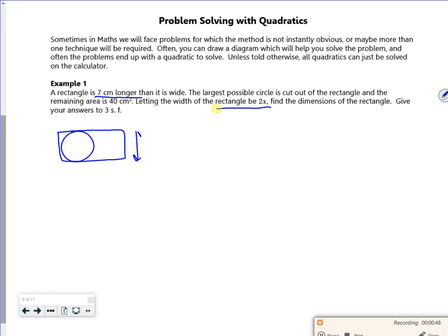So it tells you the width is 2x. It tells you that the length is seven longer. Now it's nice that it set the 2x as the width because what it means is that the circle must be x for its radius. And the rest of it is 40. It says the remaining area is 40, so this bit here is worth 40.